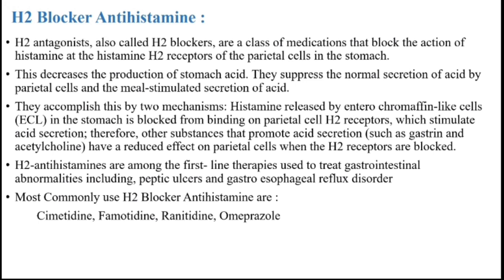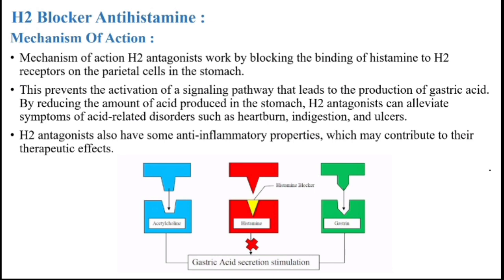H2 blocker antihistamine. H2 antagonists, also called H2 blockers, are a class of medication that blocks the action of histamine at the H2 receptor on parietal cells in the stomach. They decrease the production of stomach acid by suppressing the normal secretion of acid by parietal cells. Most commonly used H2 blocker antihistamines are cimetidine, famotidine, ranitidine, and omeprazole. Their mechanism of action involves blocking the binding site of H2 receptors on parietal cells, preventing activation of the signaling pathway that leads to gastric acid production.